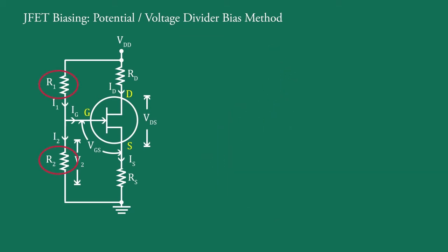The resistors R1 and R2 form a potential divider across drain supply voltage VDD.